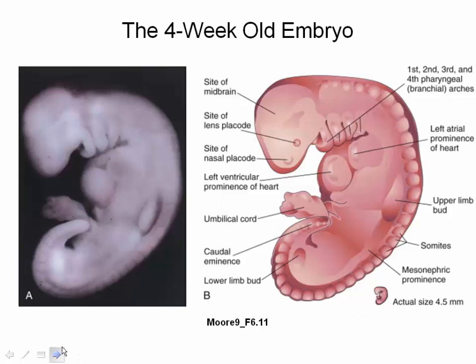By the end of the fourth week of development, the embryo, which is still only about four millimeters long, has established the rudiments of most of the major organ systems. Externally, the embryo is C-shaped with a prominent row of somites along either side of the dorsally located neural tube. The head is relatively featureless, and in the cervical region, pharyngeal arches are prominent. The body stalk, or developing umbilical cord, still occupies a significant part of the ventral body wall, and the developing heart is represented as a prominent bulge along it. Caudal to the body stalk, the body tapers to a somewhat spiraled tail, which is prominent in embryos of this age and will regress over time.